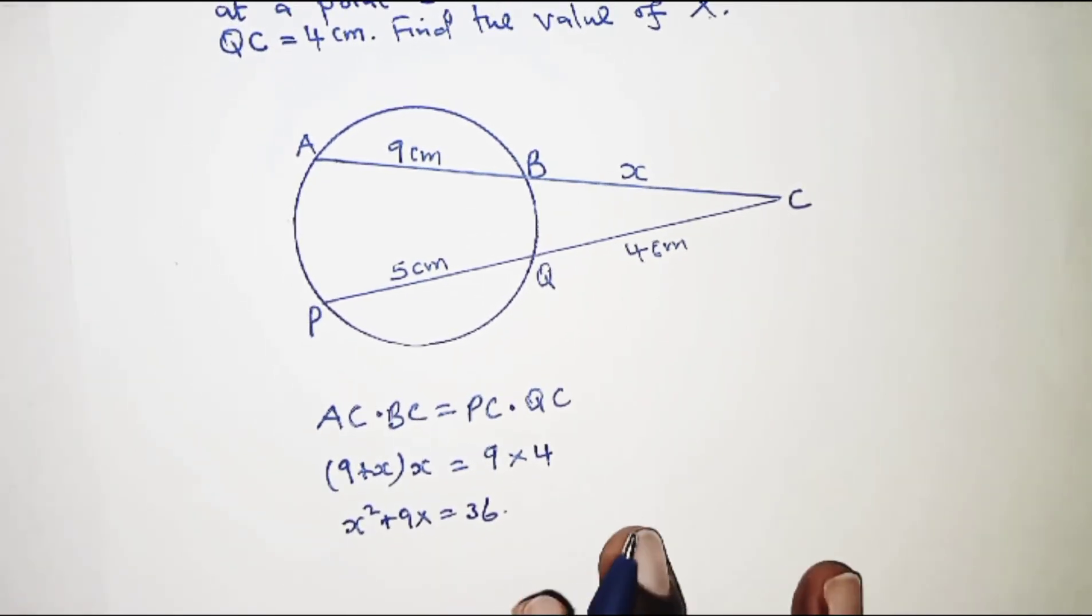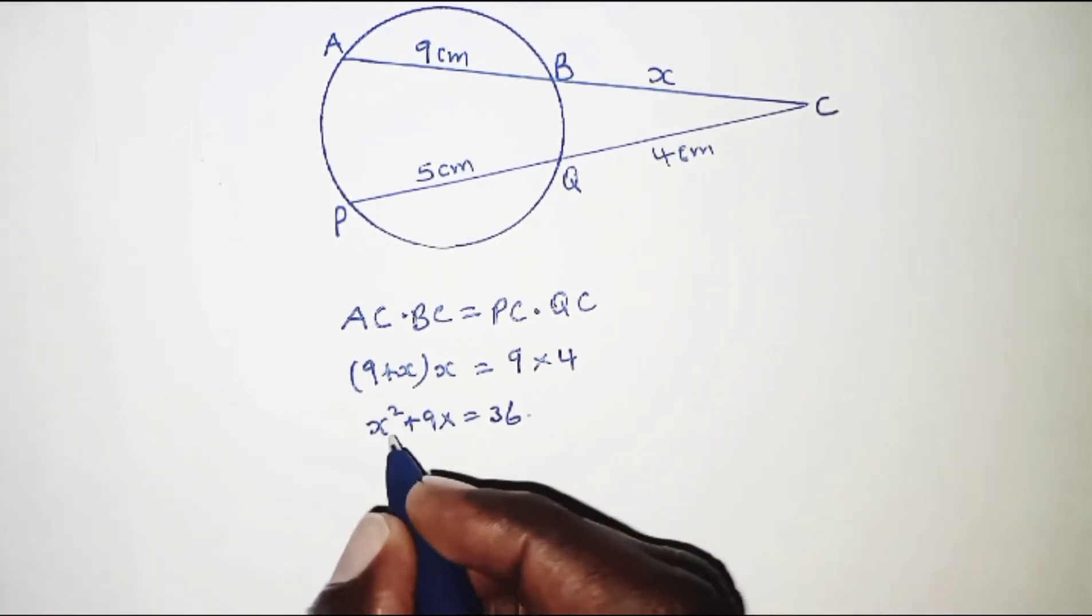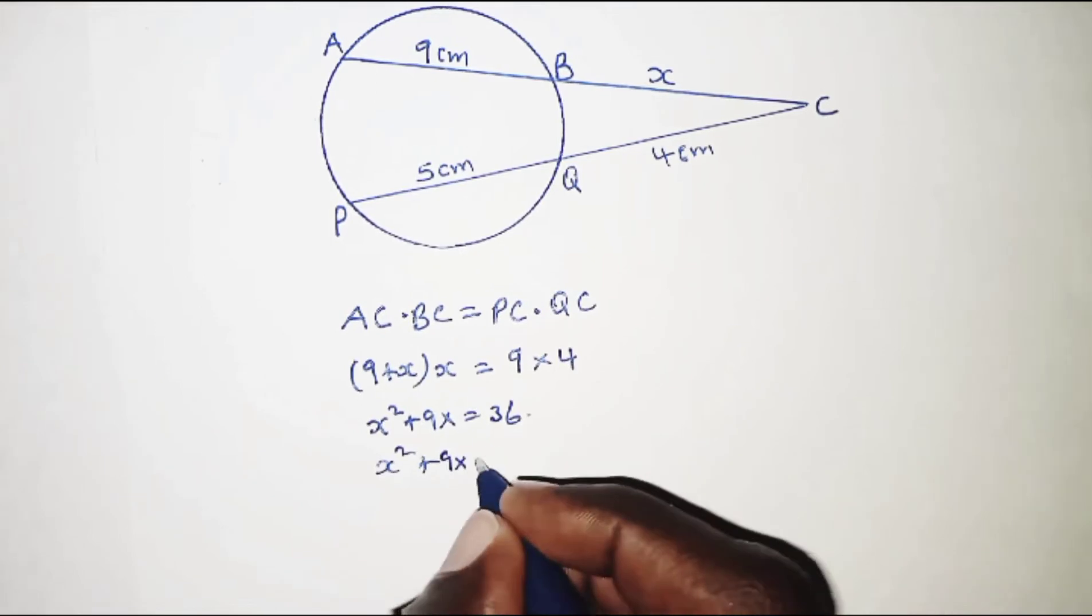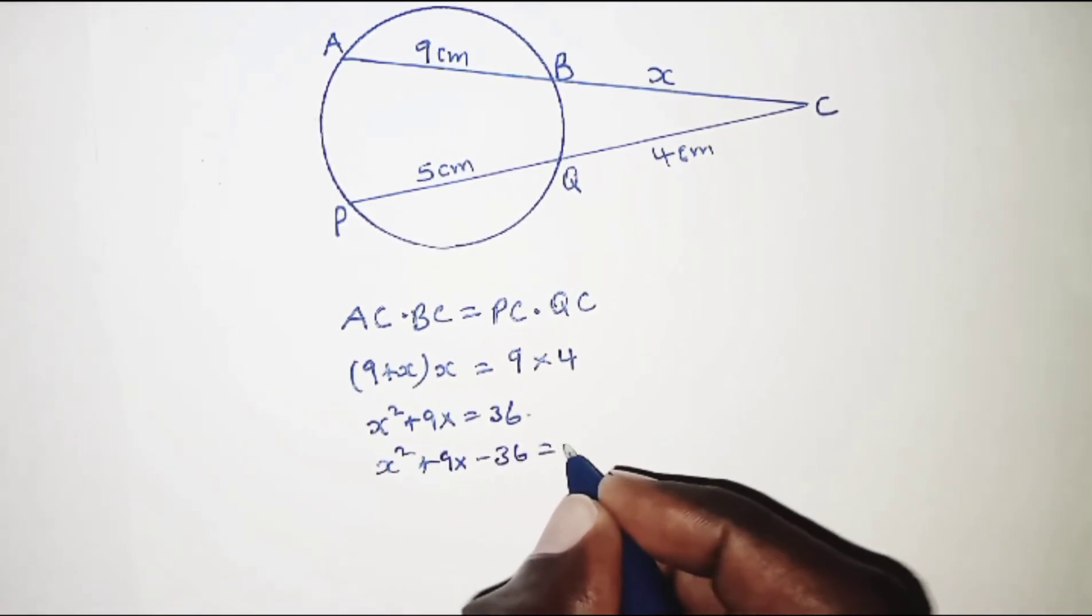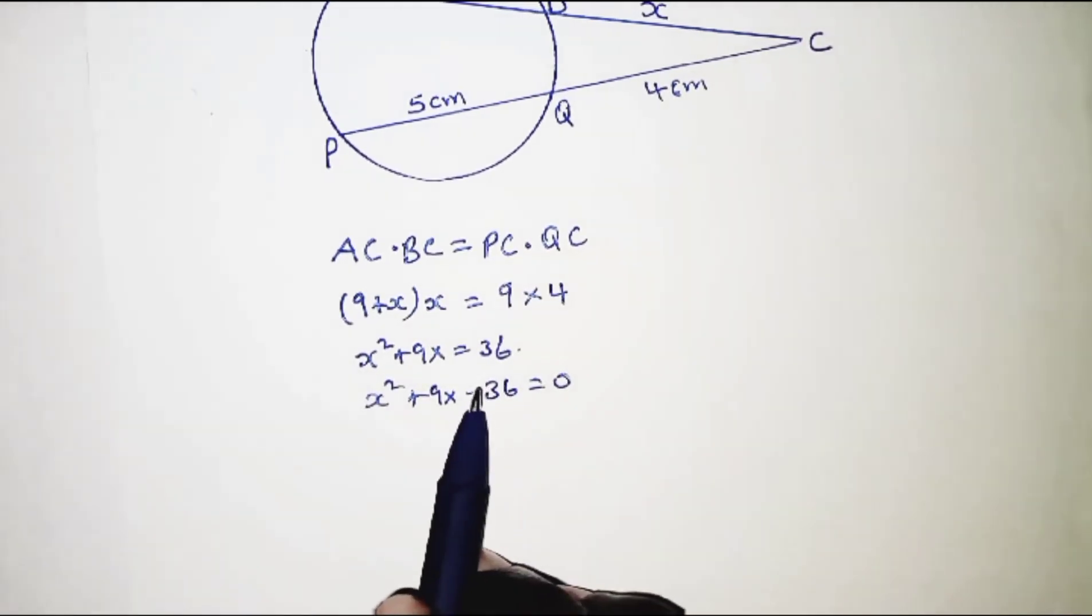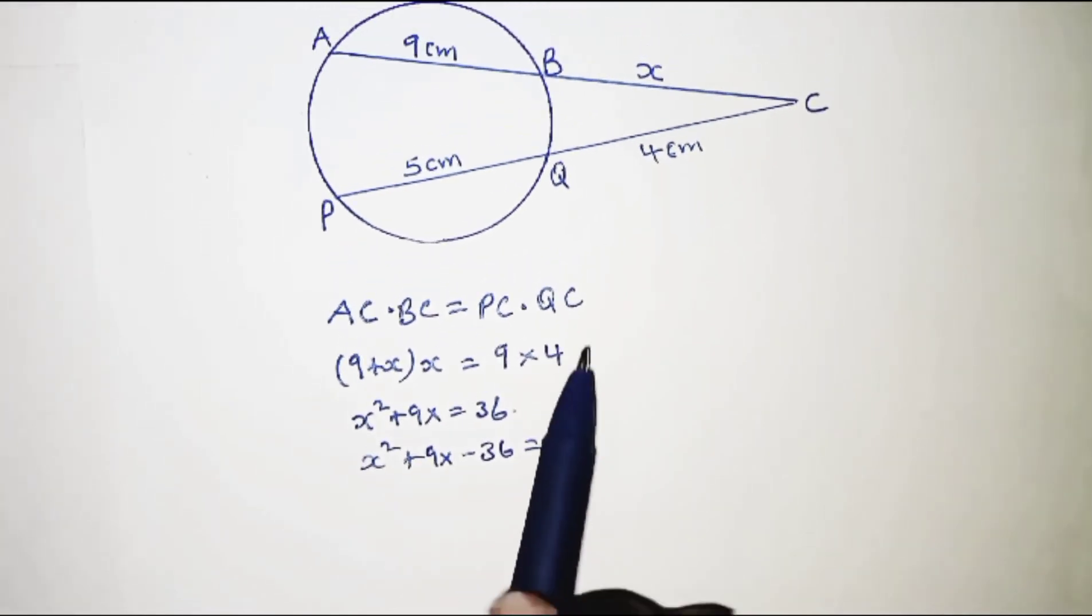We can express this as x² + 9x - 36 = 0. We've ended up with a quadratic equation, and our task is to solve it to find the value of x.